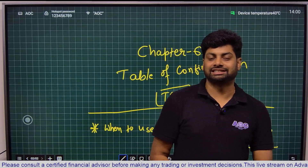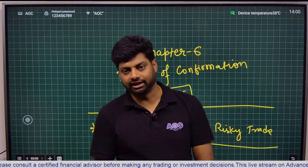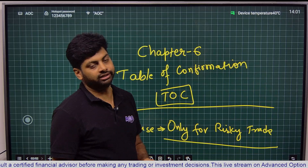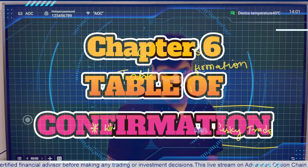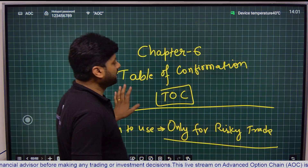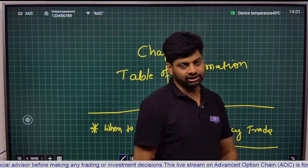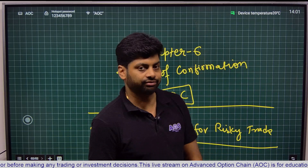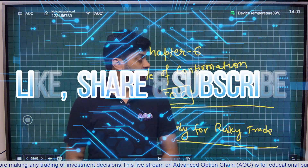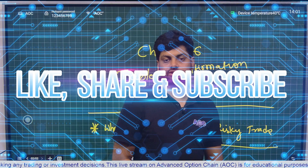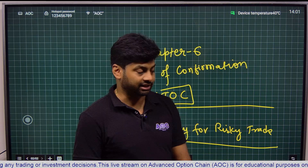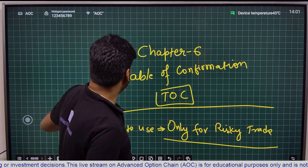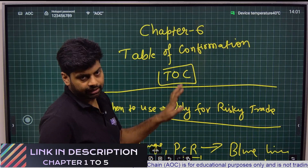Welcome guys to chapter 6 of learning AOC. Today we are going to talk about the table of confirmation, TOC. Before learning this chapter, you need to have a good understanding of chapters 2, 3, and 4. So if you have not already watched those chapters, please go and watch them first. Then only you can continue to this chapter.